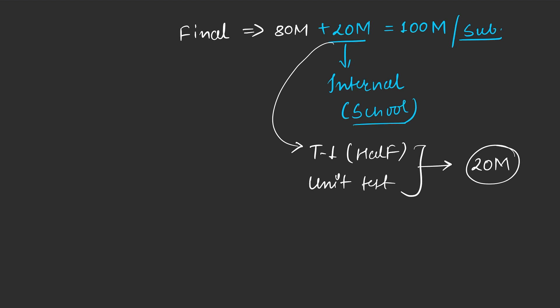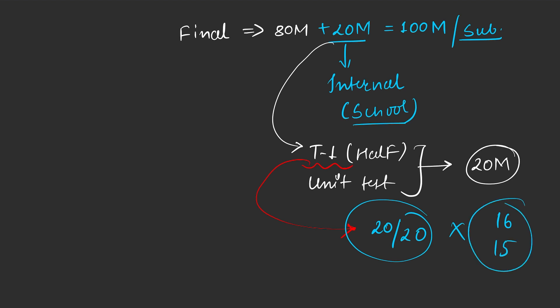Now, if any child cannot perform well — for example, in unit tests they do not perform well — the teacher will take action. Instead of giving 20 out of 20, the teacher may give 16 or 15 marks. If the teacher sends full marks for a student who didn't perform well, it can be a problem for the teacher. That's why you have to focus on securing those 20 internal marks by performing well in unit tests and term one.